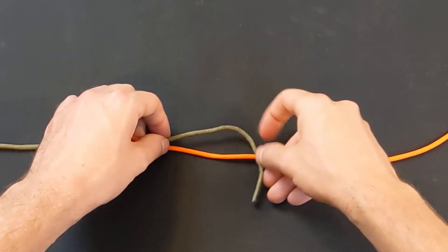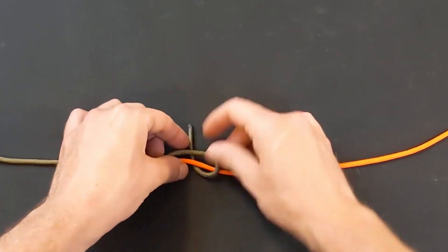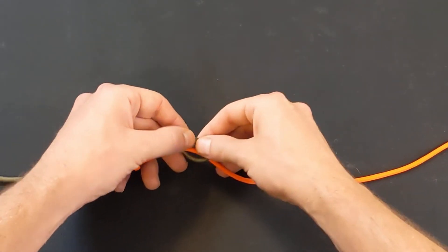Repeat this with the other end of line. Go over the other line, back underneath both, and into the loop you just made.